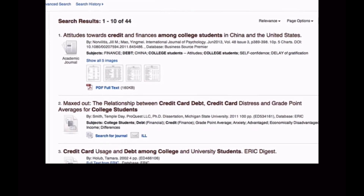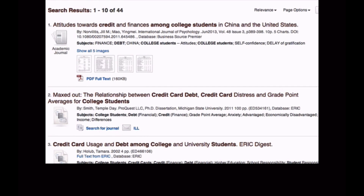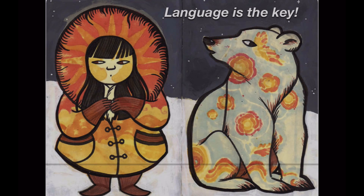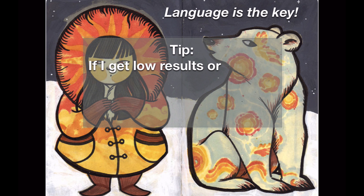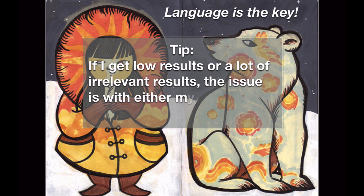Now, there may be some useful information here, but surely more than 44 articles have been written on college students and credit card debt. Here's an important rule of thumb for searching databases: if I get low results or a lot of irrelevant results, then there is a problem either with my language or with my location. And my location for this topic is fine — information on credit card debt among college students can be found in these article databases.